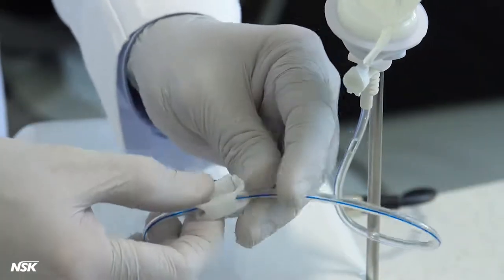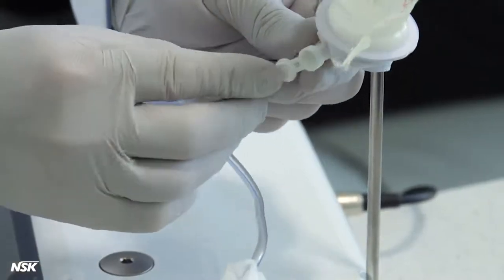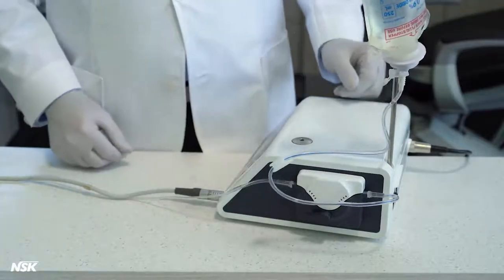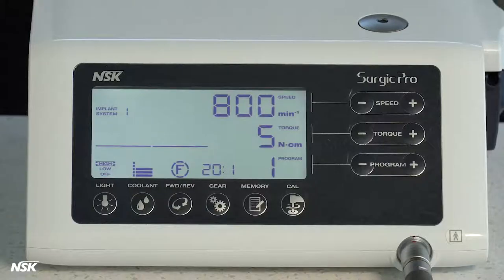Open the tube clamp and the air cap. Your Surgic Pro is ready to operate. Unit controls: Now, let's review the touch panel on the front of the unit and its control buttons.